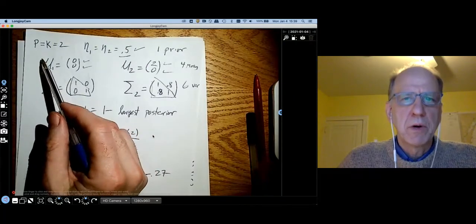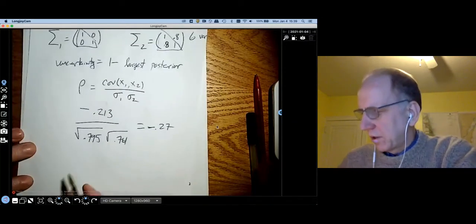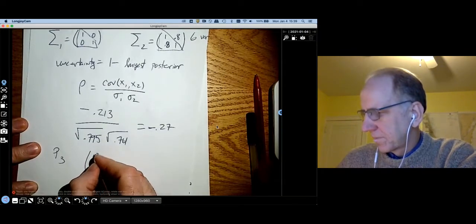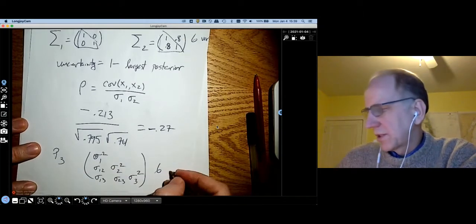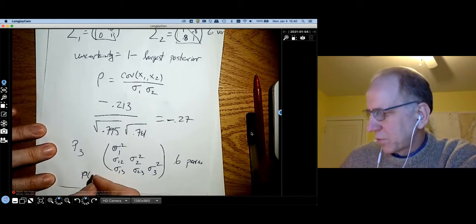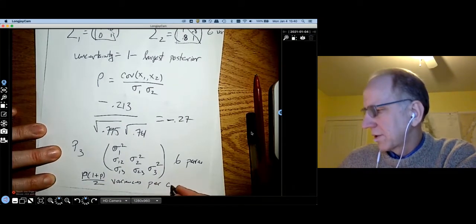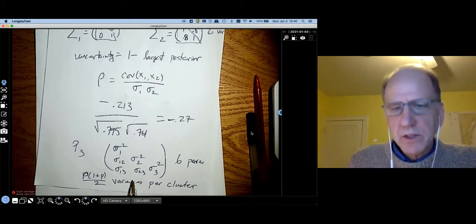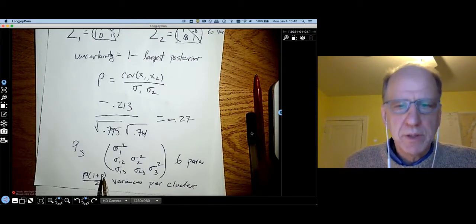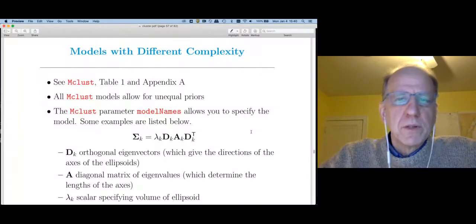When p grows, however, we're going to have a problem because these covariance matrices are going to get much bigger. For p equal to three, my covariance matrix is going to look like this, which has six parameters. In general, we have p times one plus p over two variances per cluster. So the number of variance terms grows quadratically with p. If p is even moderately large, we are not going to be able to estimate the full covariance matrix.